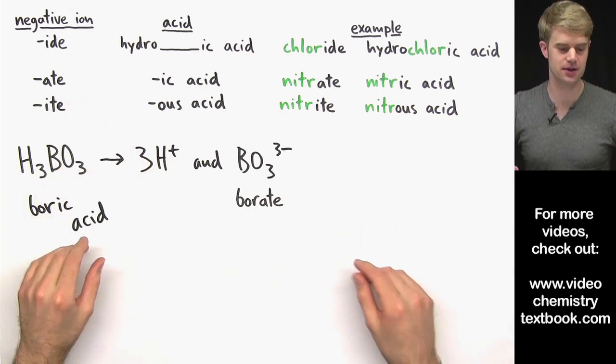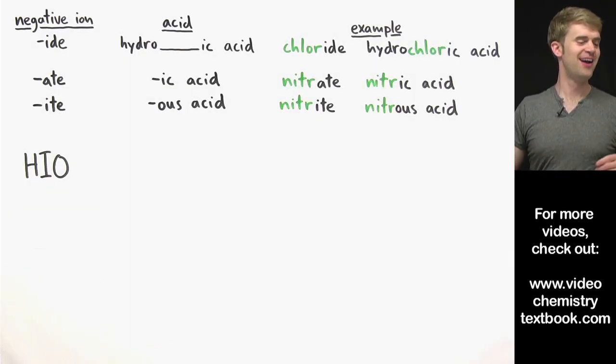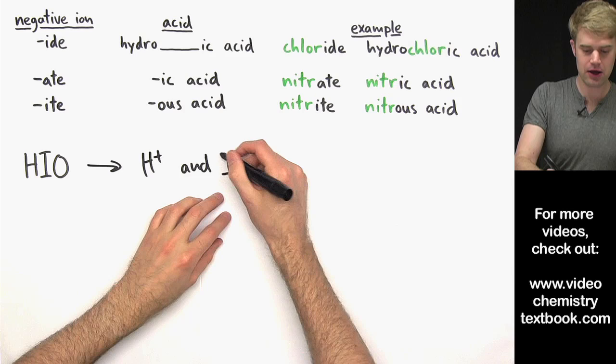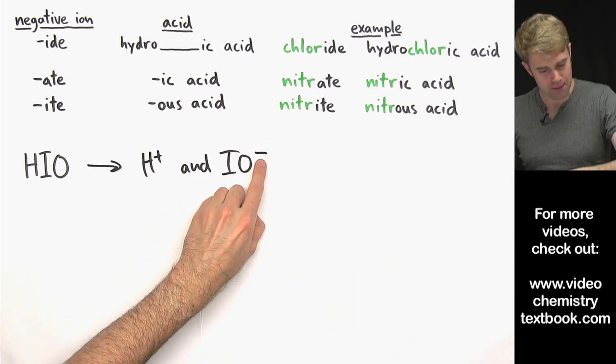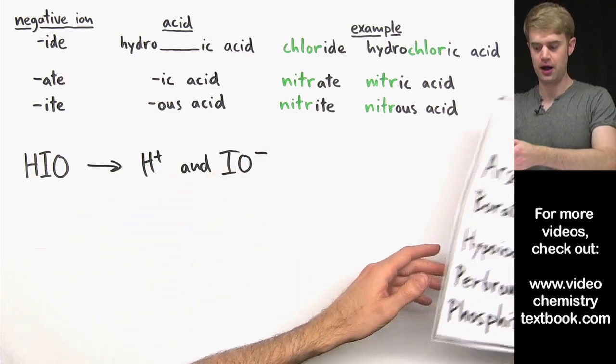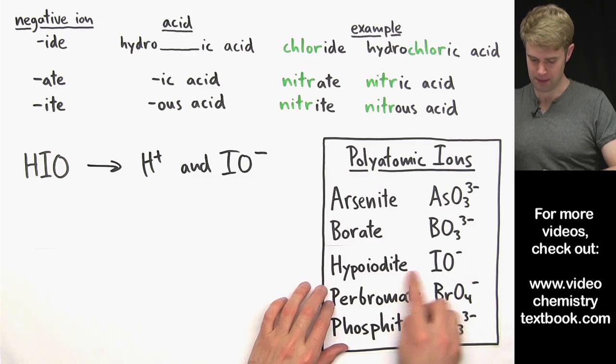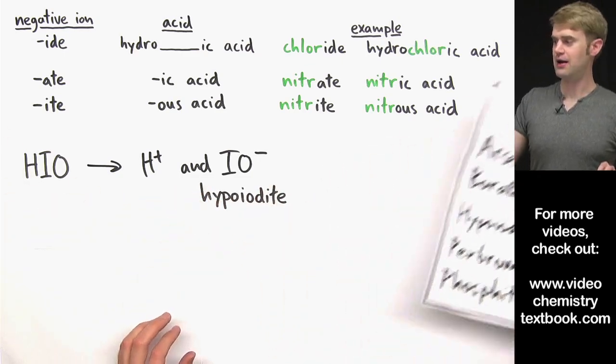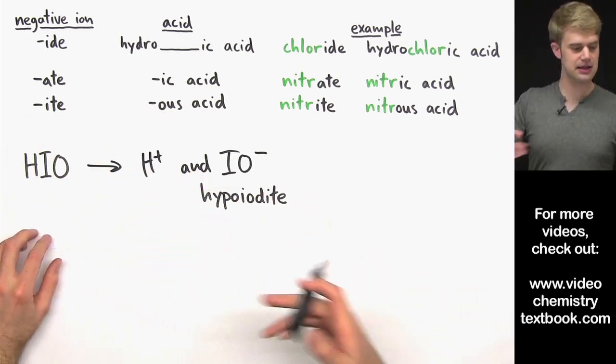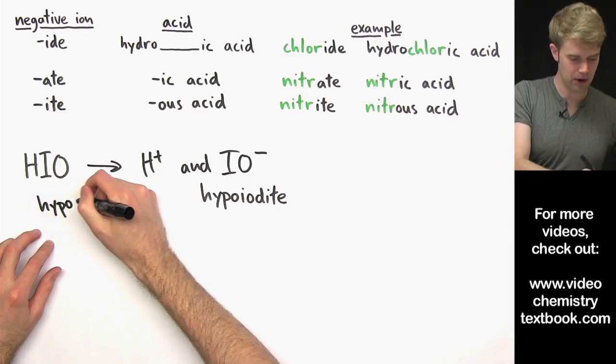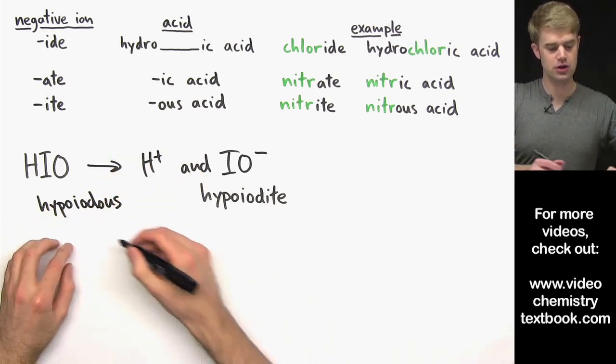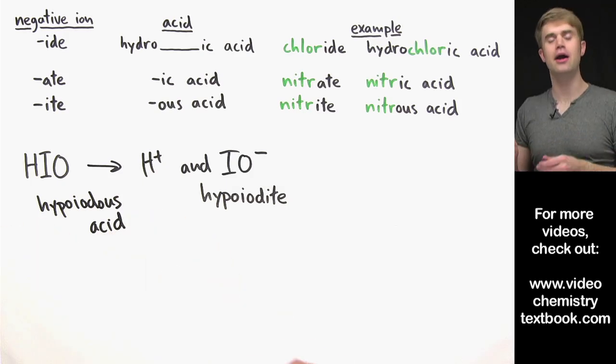One more and you'll be a pro at this. HIO. We'll break this apart into H+ and IO one minus. It's IO one minus to balance out the one plus charge on the H. What is the name of this polyatomic ion here? We've got to name it. And it is IO one minus hypoiodite. And hypoiodite ends in I-T-E, so we use this rule here. We take off the I-T-E and we call the acid hypoiodous, hypoiodous acid.